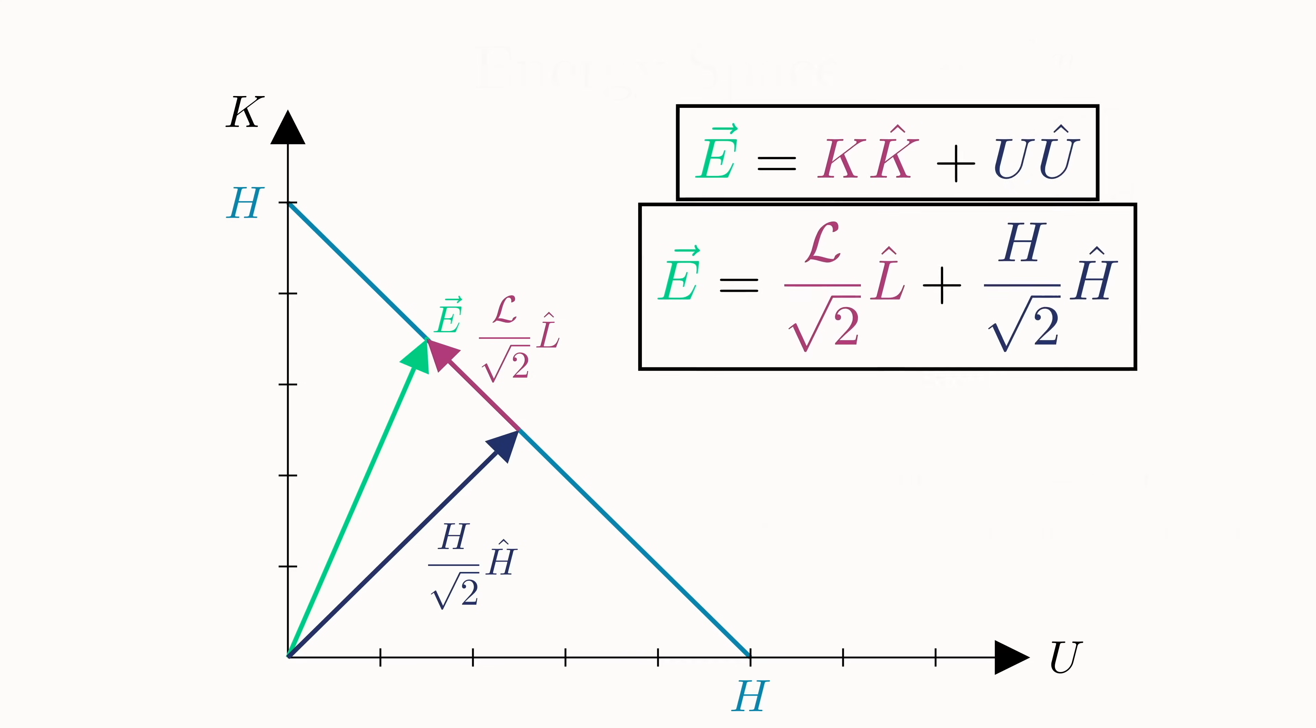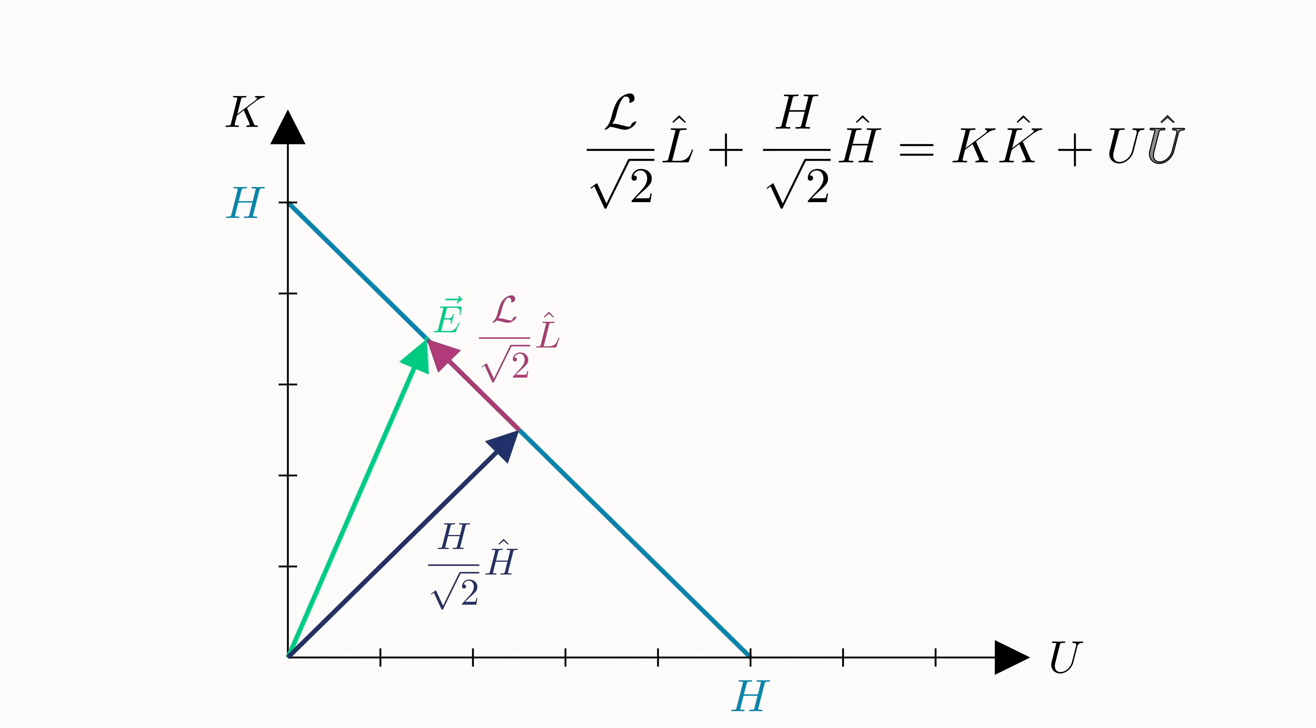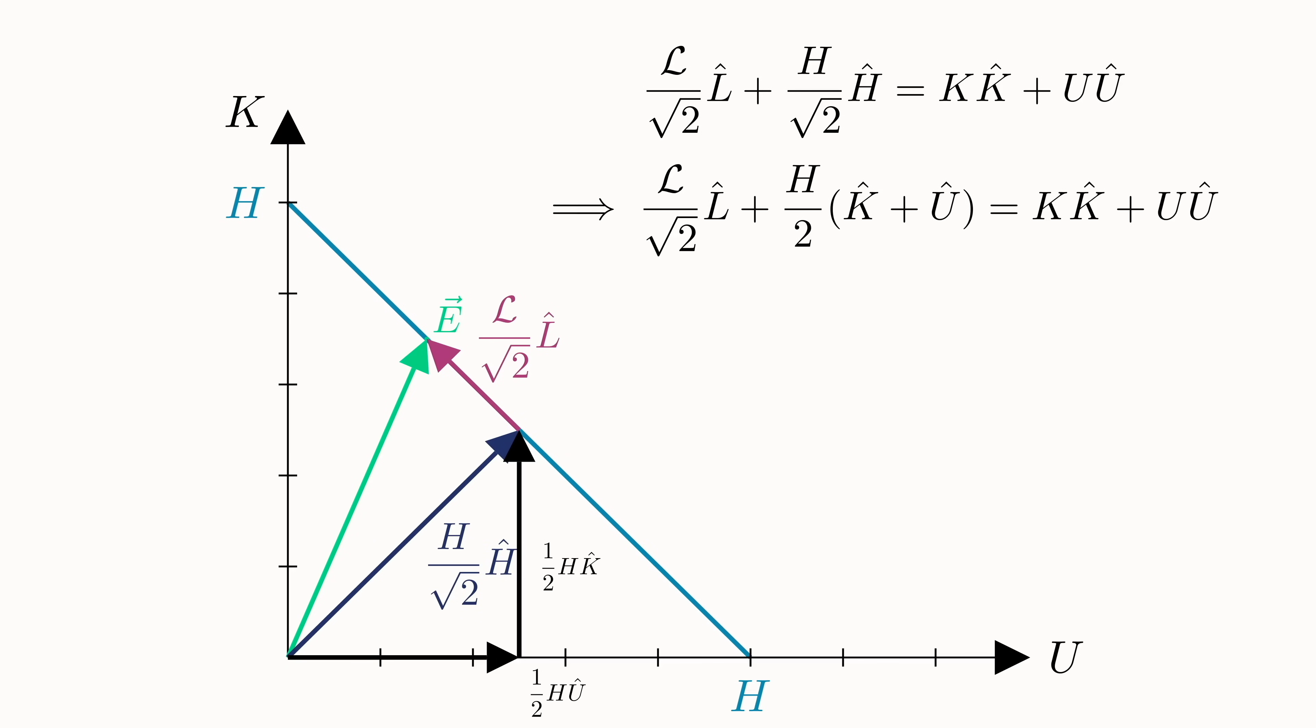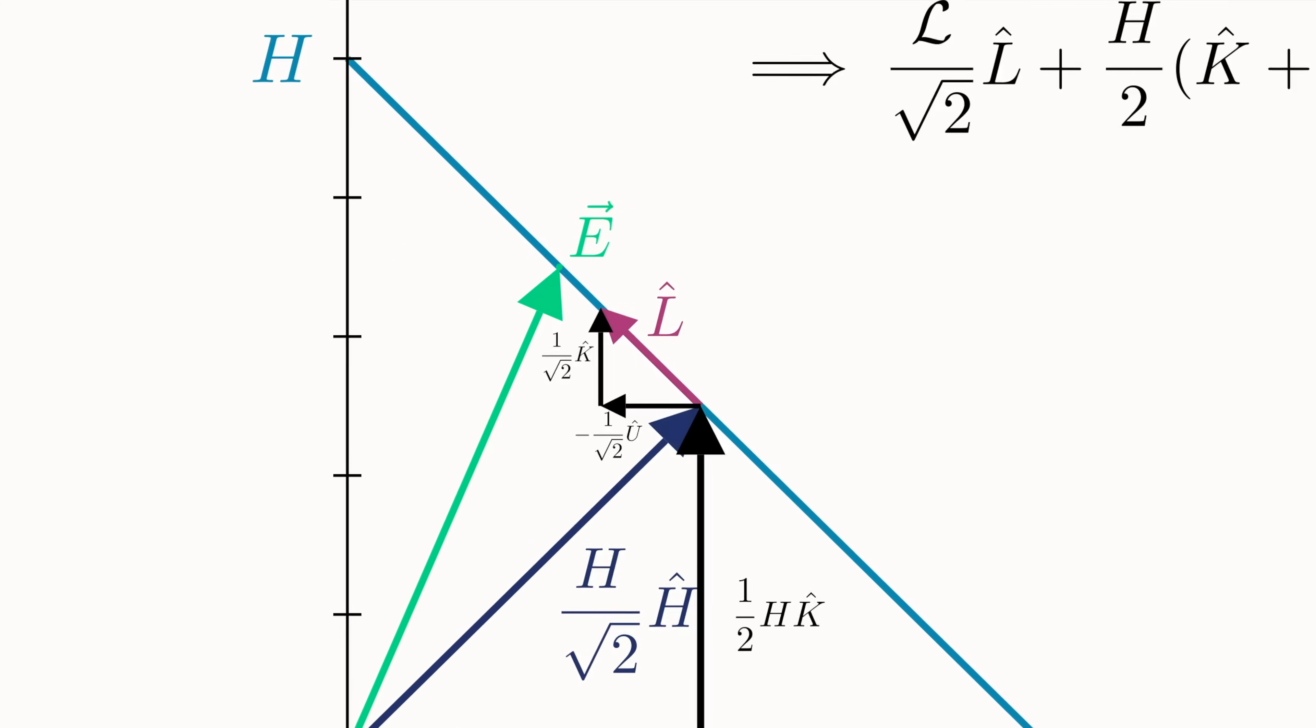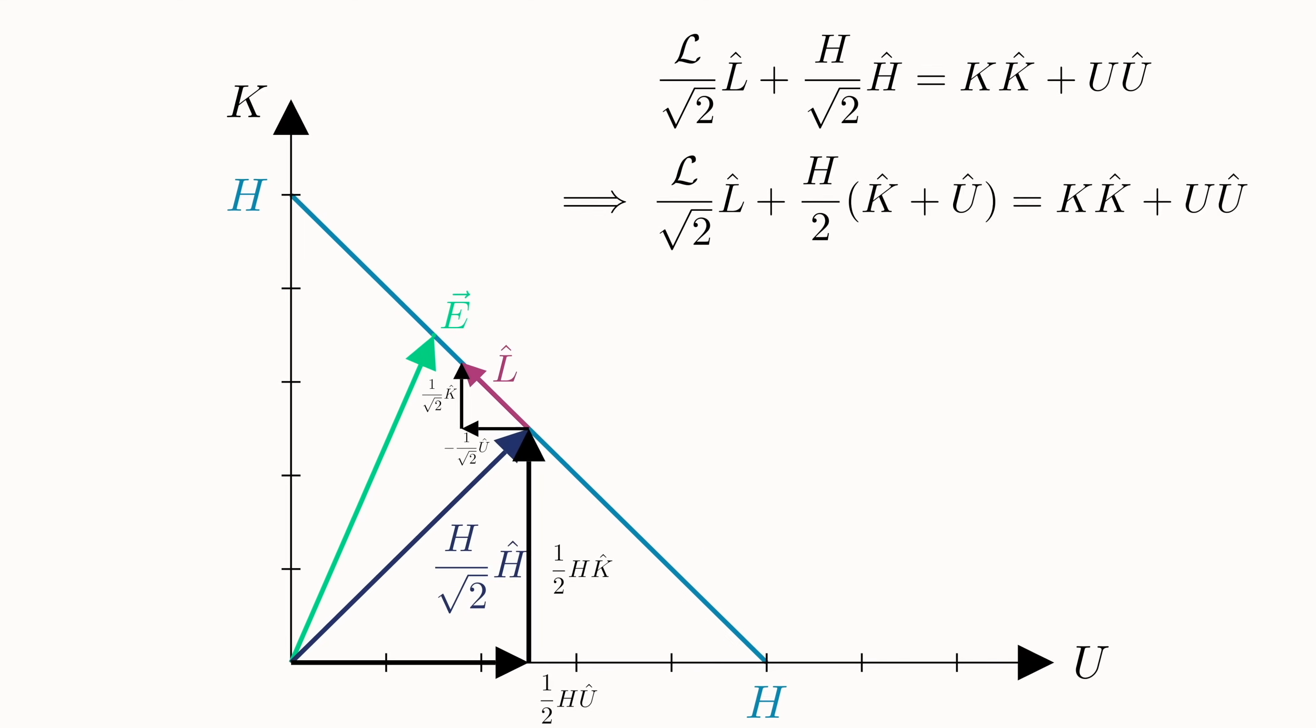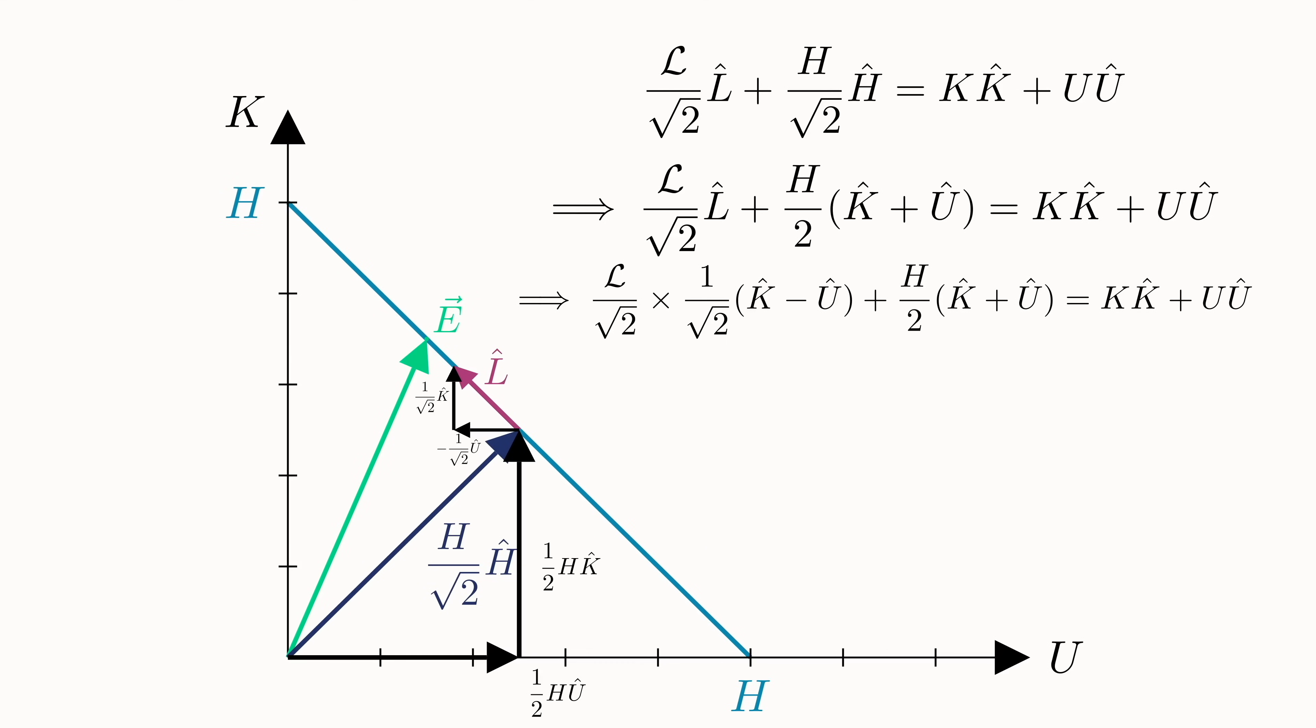So now we have two different expressions for the vector e that represents a specific energy state. Setting these equal, the next step will be to solve for the function l. First, we get rid of h-hat by noticing that h over the square root of 2 h-hat just equals 1 half h in the u-hat direction plus 1 half h in the k-hat direction. We can get rid of l-hat in a similar way. And arranging like terms together, we get this.